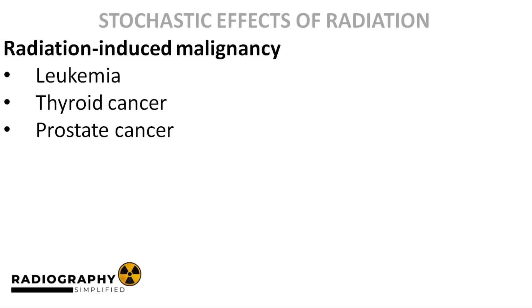Another common stochastic effect of radiation is radiation-induced malignancy. One common example would be leukemia. Leukemia is a form of malignancy which involves blood-forming tissues such as the bone marrow. It causes compromised immunity to infection. Leukemia has been observed in individuals that received radiation. Other radiation-induced malignancies include thyroid cancers, prostate cancer, among others.